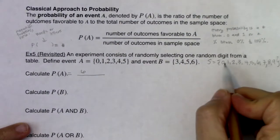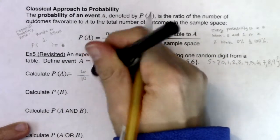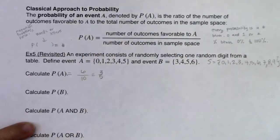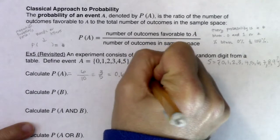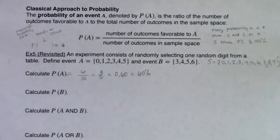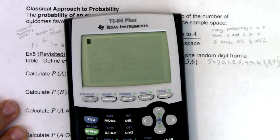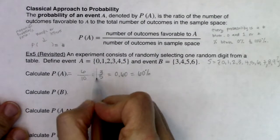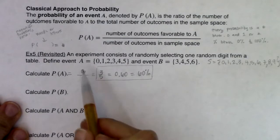The number of outcomes in my sample space is ten. So that ratio is six out of ten, which you can reduce to three out of five. Six divided by ten is 0.6, and three divided by five is also 0.6. So the three correct answers are 3/5, 0.60, or 60%. Six out of ten is not correct because that fraction is not reduced.